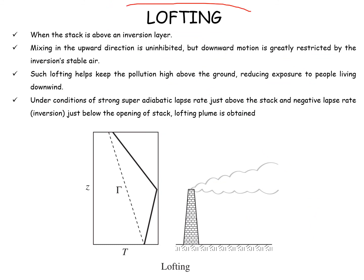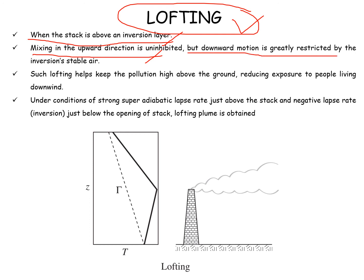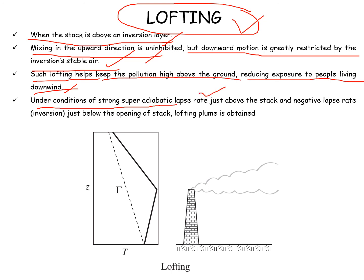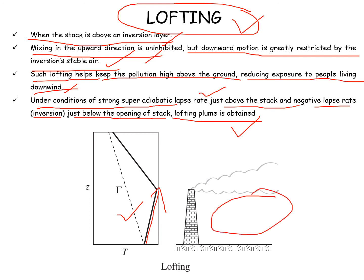In the lofting kind of plume behavior, the stack is above the inversion layer. Mixing in the upward direction is uninhibited, but downward motion is generally restricted due to the inversion stable layer. Such lofting keeps the pollution high above the ground, reducing exposure to people downwind. Under the condition of a strong superadiabatic lapse rate just above the stack and a negative lapse rate inversion just below the opening of the stack, a lofting plume is obtained. This is the best type because inversion restricts movement of pollutants to the ground while they move upward — this behavior is highly useful.